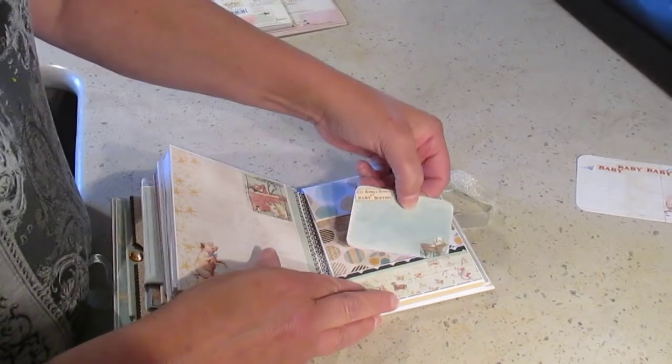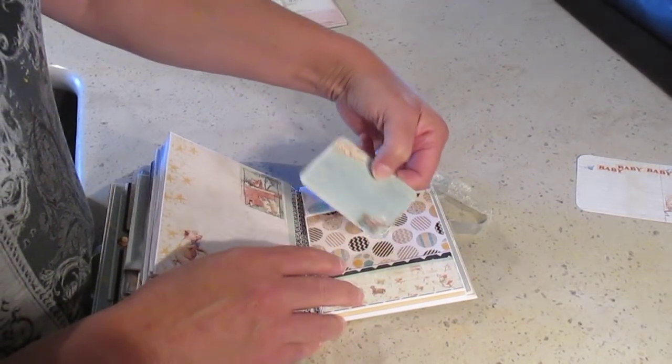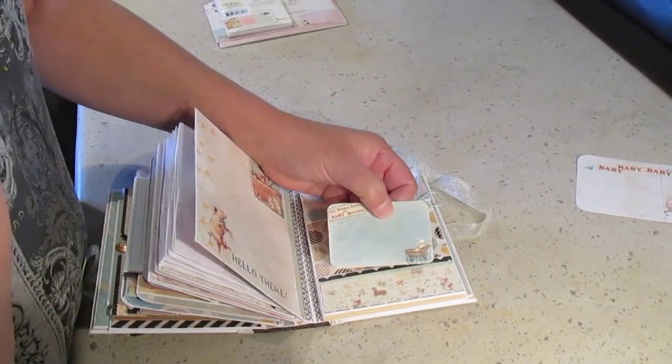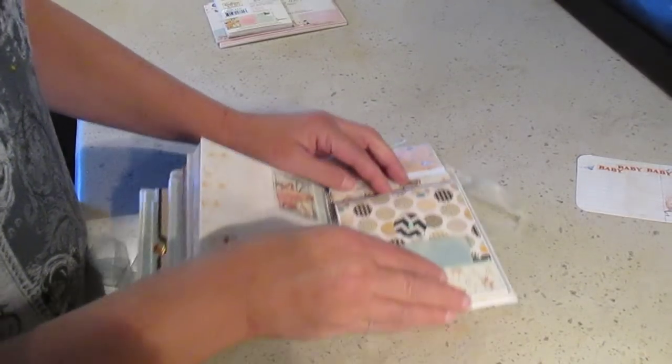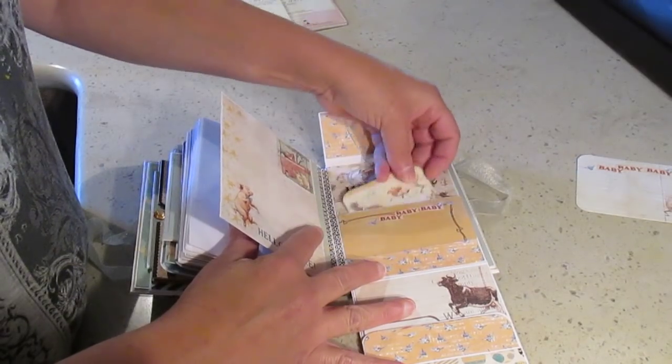So I made two little pockets, this one here and this one here. And this cute card with a little baby in the, in the, what do you call that? I forget. So anyway, so it opens like this. And here opens like this.